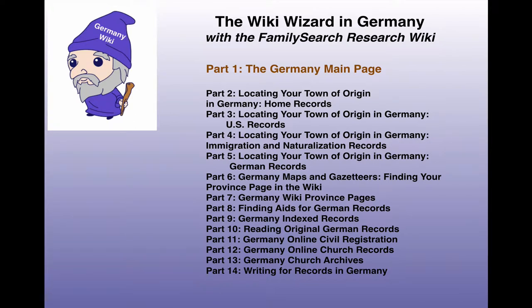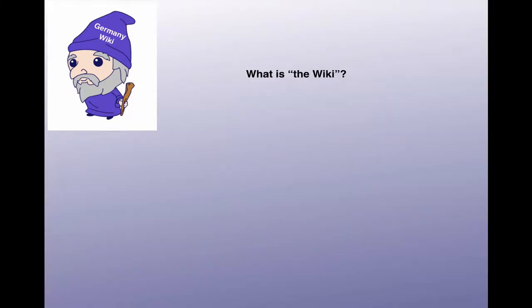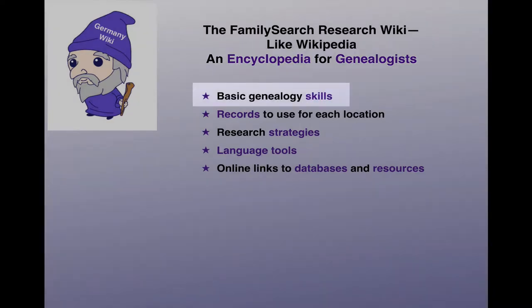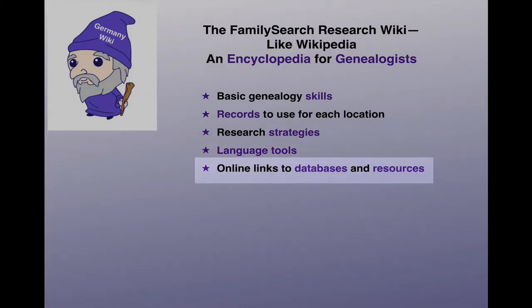This is the first video in a series intended to teach you how to use the resources of the FamilySearch Research Wiki to learn how to find genealogical records about your ancestors who lived in Germany. The FamilySearch Research Wiki is very similar to Wikipedia, except that it's limited to articles about genealogy. You will find articles on basic genealogy skills, the records that work best in Germany and how to locate those records, research strategies, and language tools to teach you the basic genealogy vocabulary that you need. You're also going to find links to databases of actual German records and resources on the Internet.